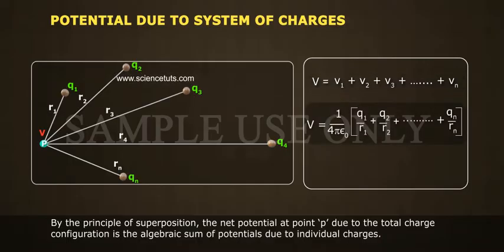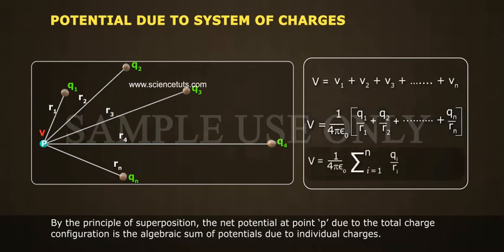V is equal to 1 by 4 pi epsilon naught of q1 by r1 plus q2 by r2 plus so on plus qn by rn. V is equal to 1 by 4 pi epsilon naught sigma i equals 1 to n of qi by ri.